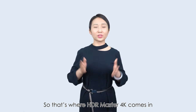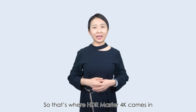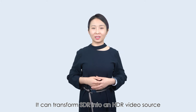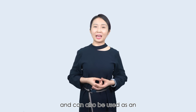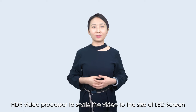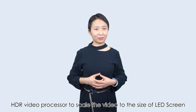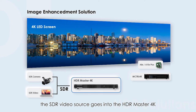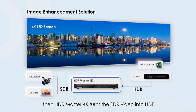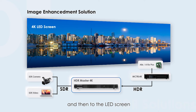So, that's where the HDR Master 4K comes in. It can transform SDR into an HDR video source and can also be used as an HDR video processor to scale the video to the size of the LED screen. As the picture shows, the HDR video source goes into the HDR Master 4K, then HDR Master 4K turns the SDR video source into HDR, which is transmitted to the controller and then to the LED screen, achieving an HDR result.